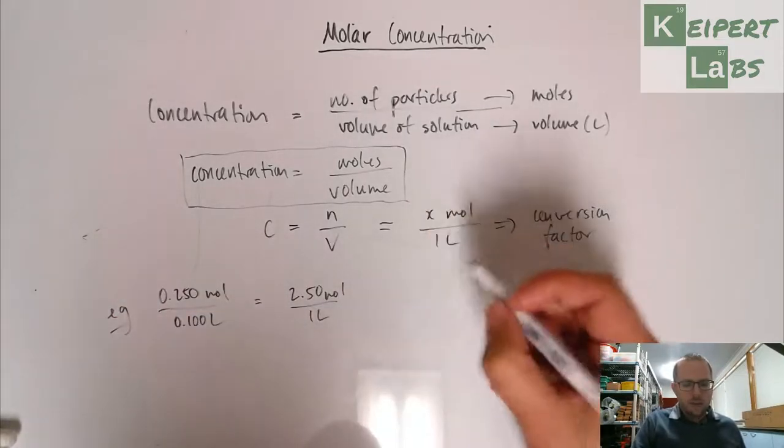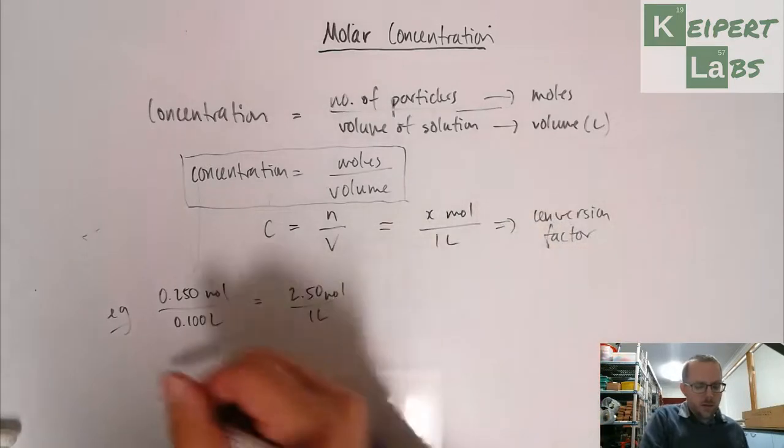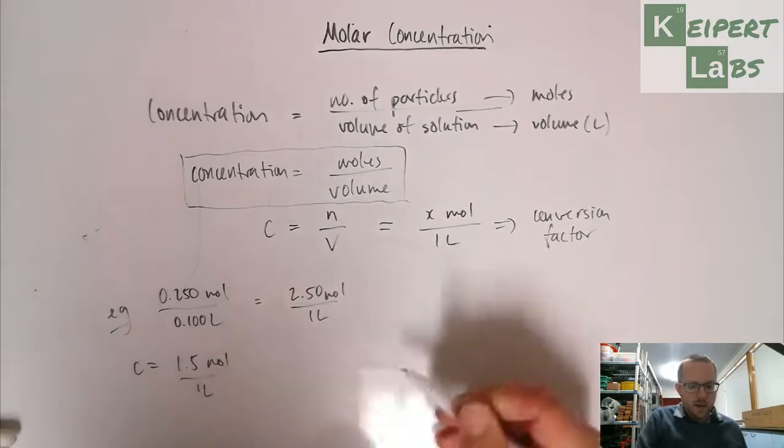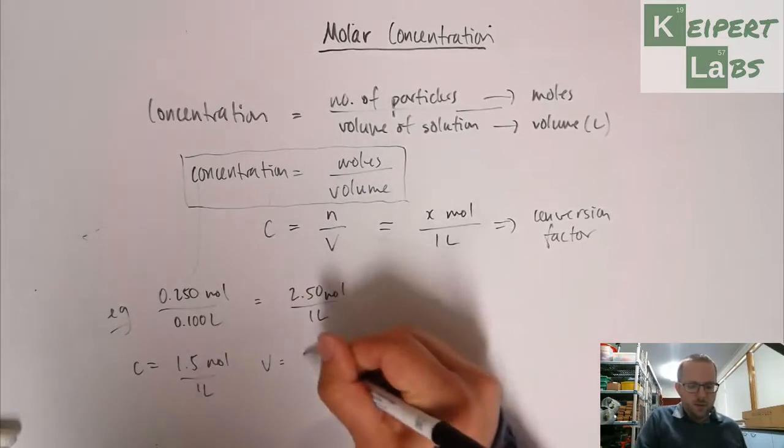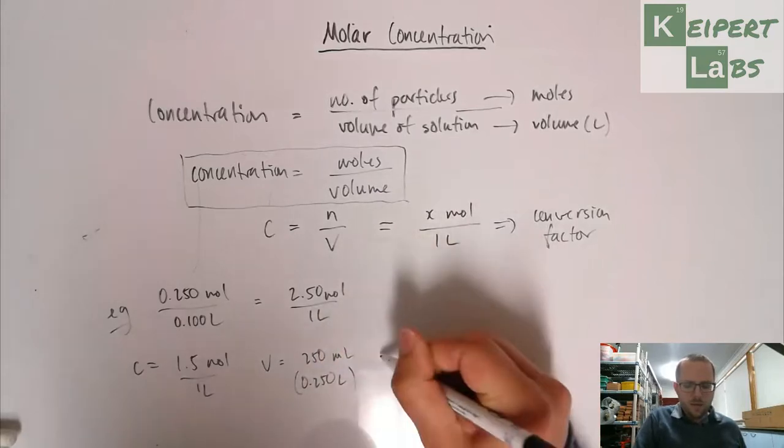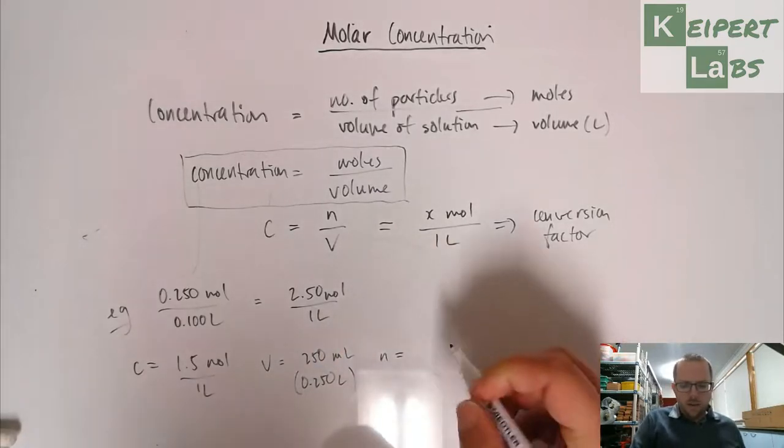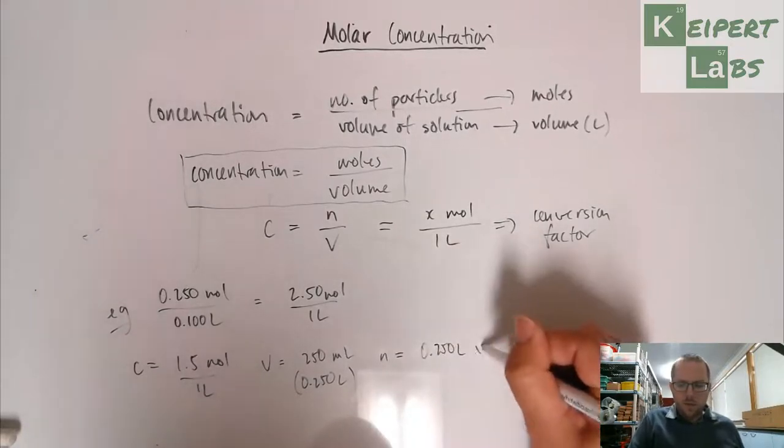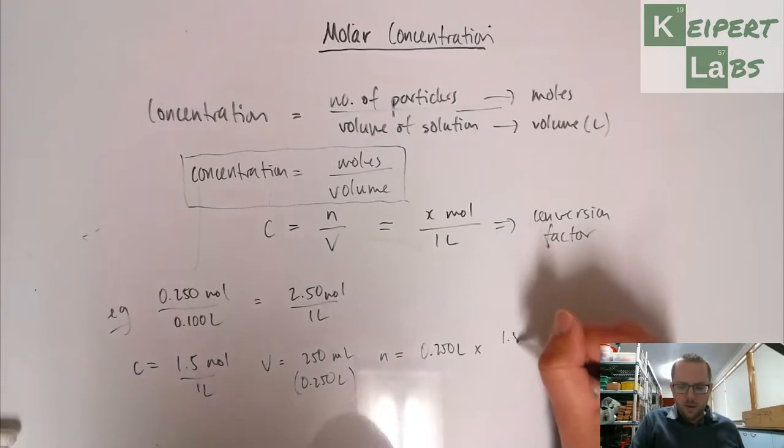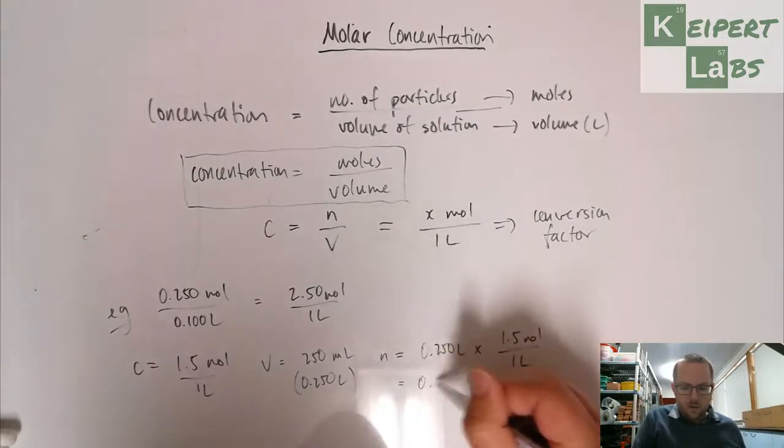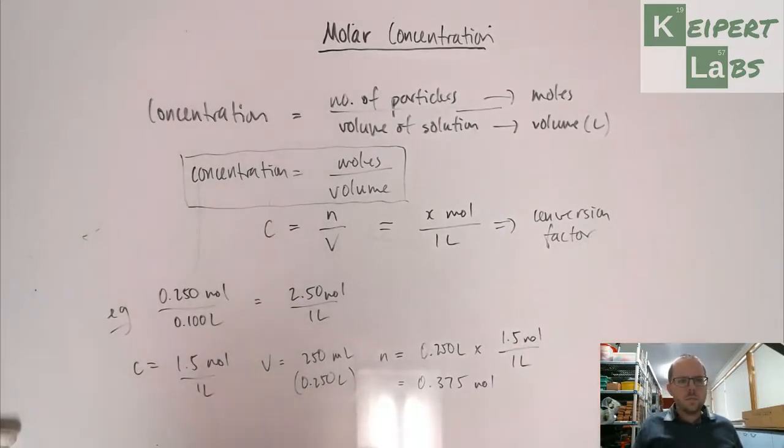Or I can say if I have a concentration of 1.5 moles for every one liter, and I have a volume of 250 mils or 0.250 liters, how many moles do I have? So the number of moles that I have, I can say 0.250 liters and multiply by my conversion factor of moles for every liter, and so then I get 0.375 moles.